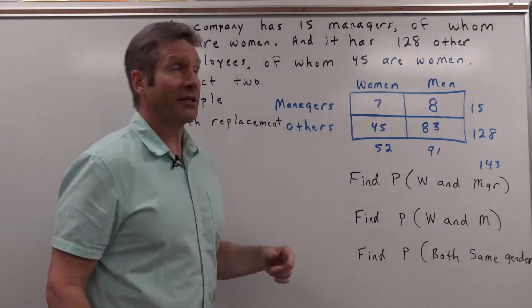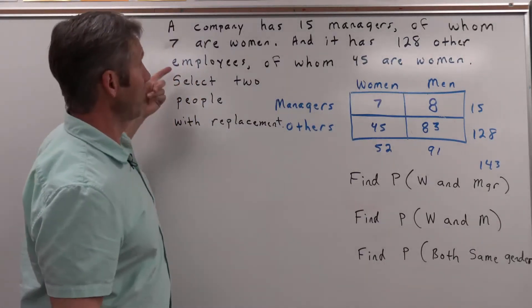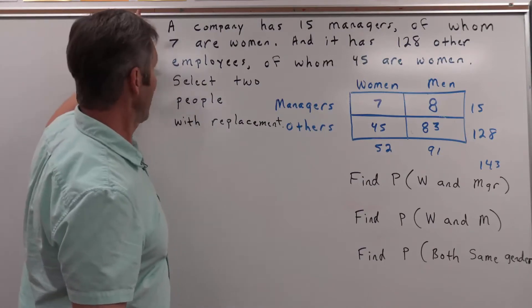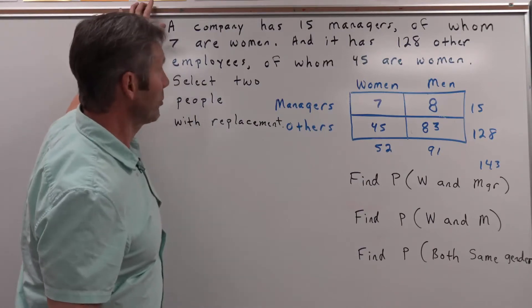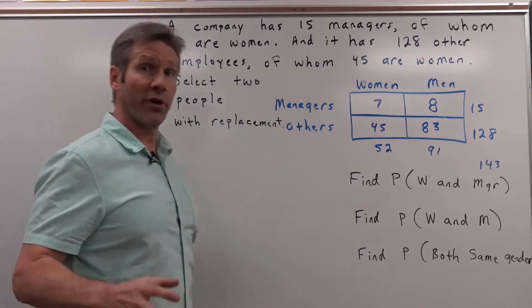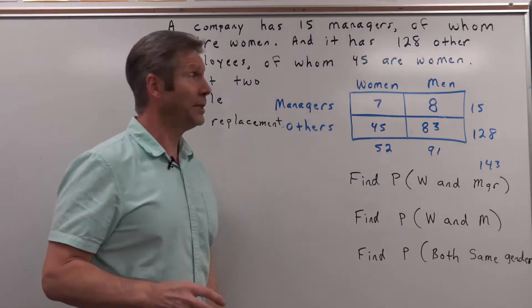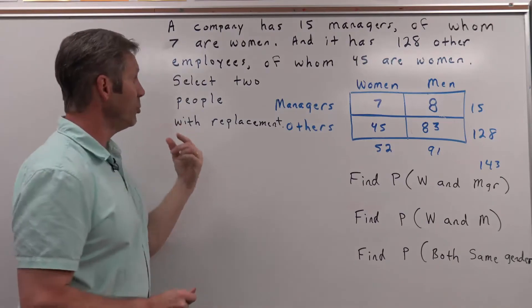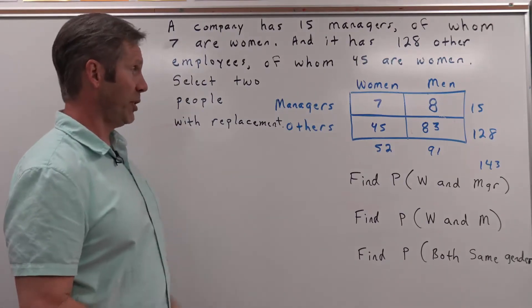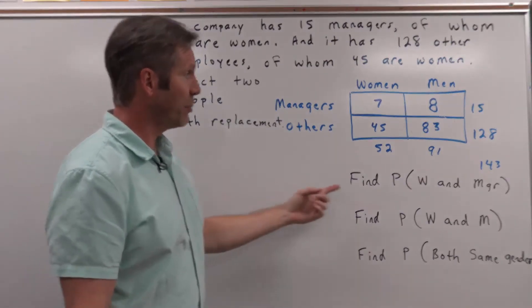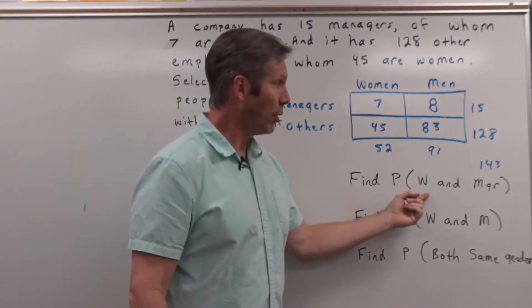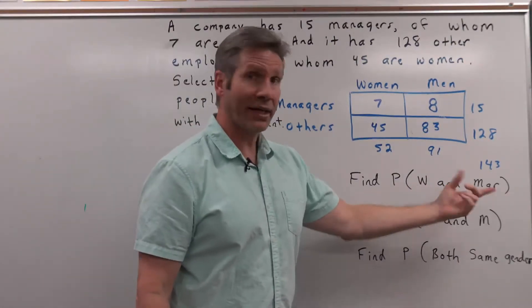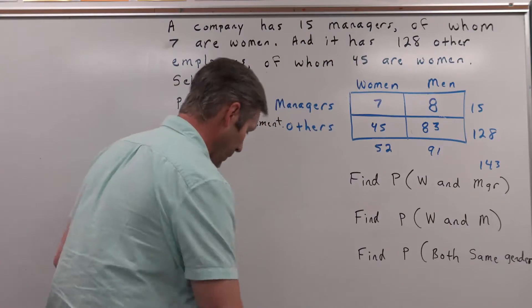The company has 15 managers, of whom 7 are women. It has 128 other employees, of whom 45 are women. We want to select two people with replacement. Find the probability we get a woman and then a manager.